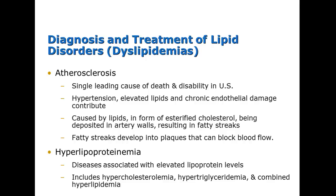Atherosclerosis is the single leading cause of death and disability in the United States. Hypertension, elevated lipids, and chronic endothelial damage contribute to it. It is caused by lipids in the form of esterified cholesterol being deposited in artery walls, and fatty streaks develop into plaques that can block blood flow. Importantly, the main cause of atherosclerosis isn't simply eating fat — it's eating high levels of carbohydrates in the presence of toxic fats. When someone eats so many carbohydrates that they're unable to use fats for fuel, those fats build up because the body always uses carbohydrates first.